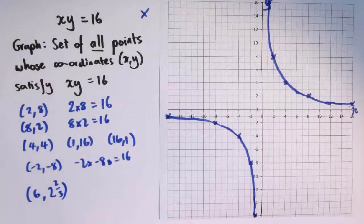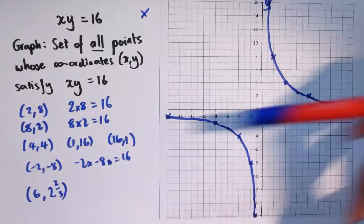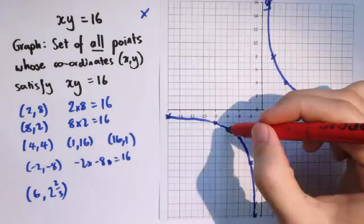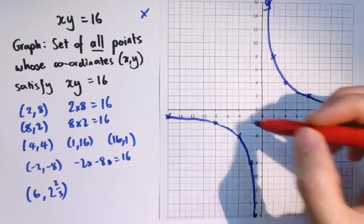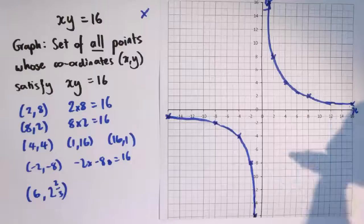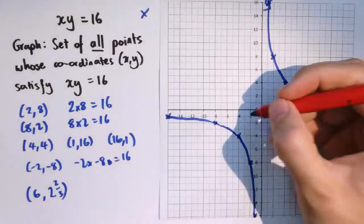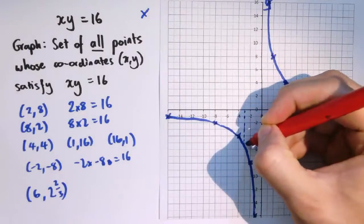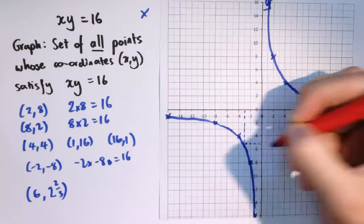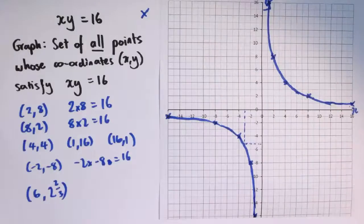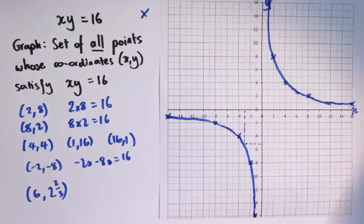I've joined them with a nice smooth curve. And if I'd done this really accurately, then I could read off any particular point and it would be exactly a point that would work in this relationship. So if I wanted to know what pair went with -3, I could read it off here. And I would get, it looks like about -5 and a bit. And in fact, exactly, it should be -5 and 1 third.